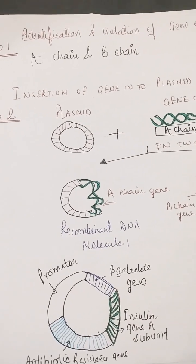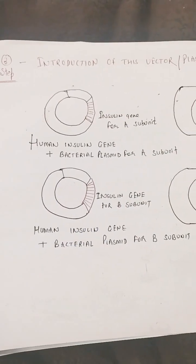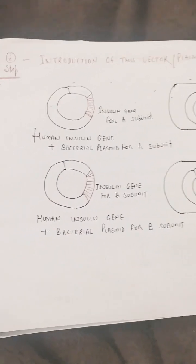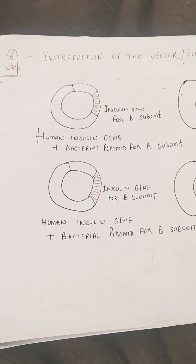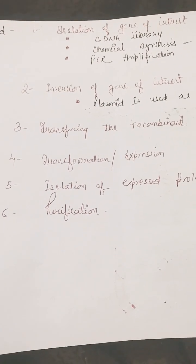of gene into the plasmid. The plasmid here will act as a vector. Second step is introduction of this plasmid into a suitable host, and as a host we use Escherichia coli. The fourth step will be the transformation.